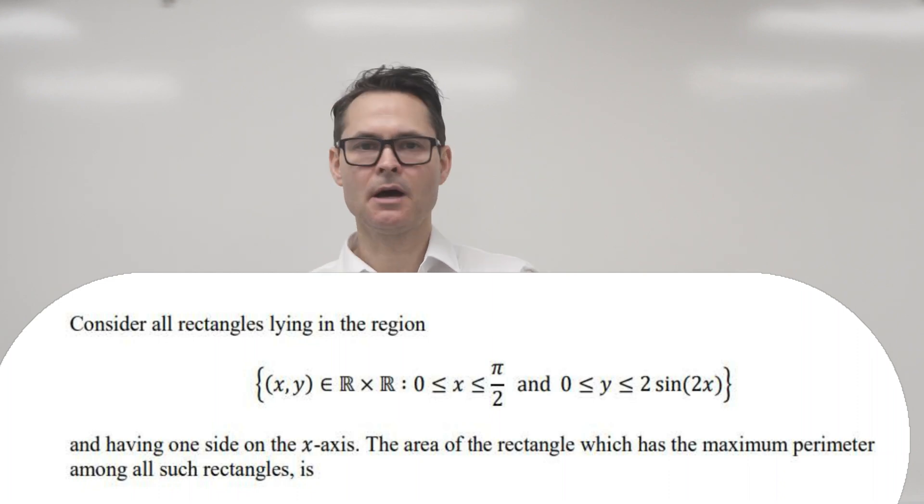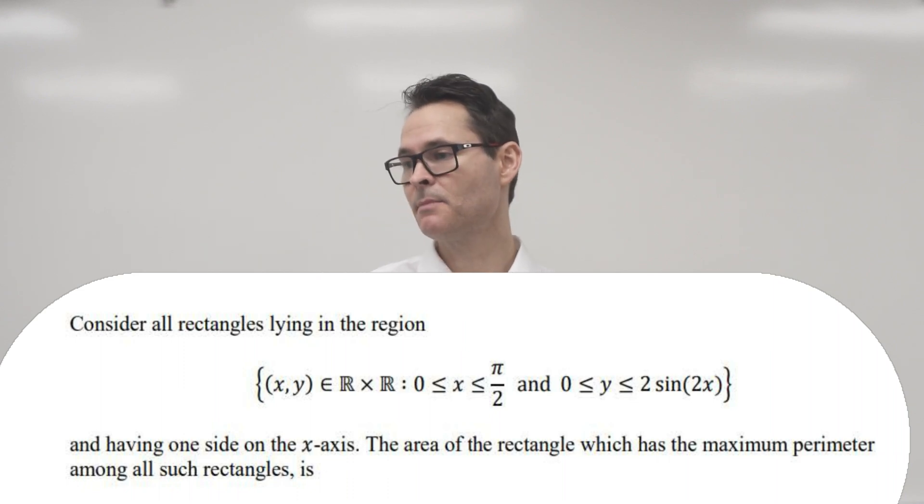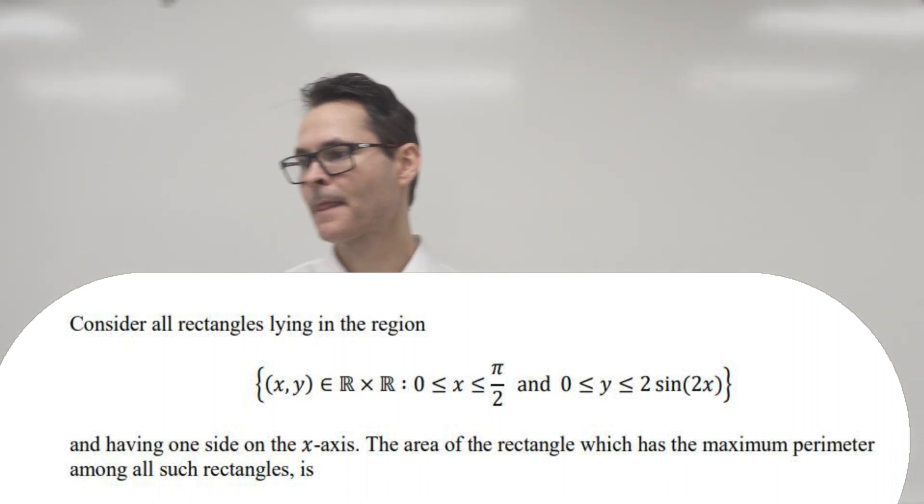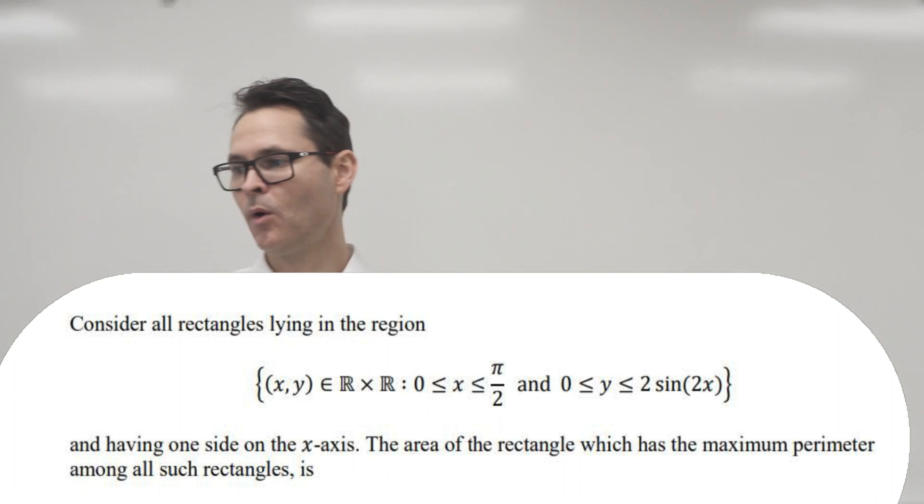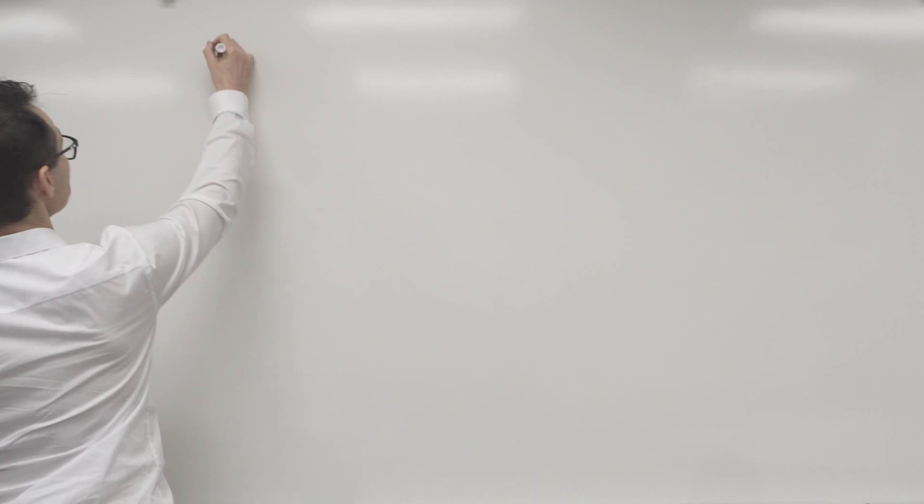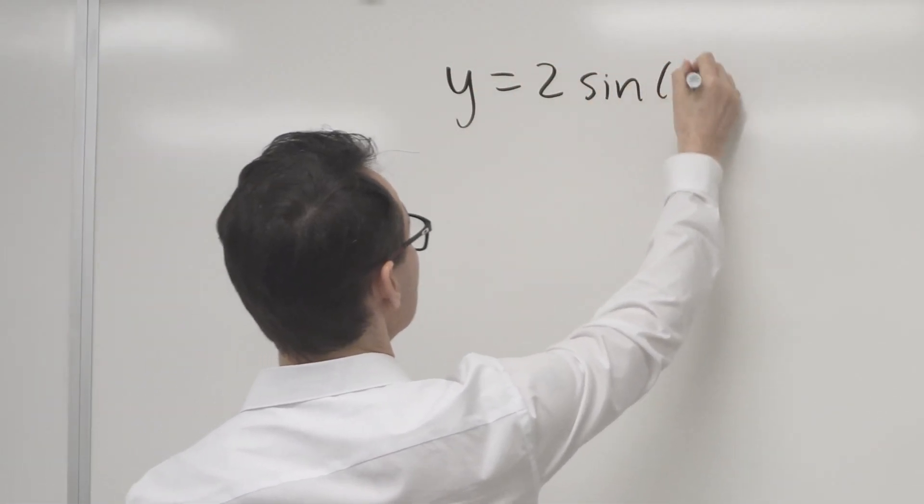It looks like it wants the maximum perimeter, so we're maximizing or optimizing the perimeter of a rectangle inscribed under a sine curve in the upper quadrant, upper right quadrant between zero and pi over two. The function they're giving us here is y equals two sine two x.